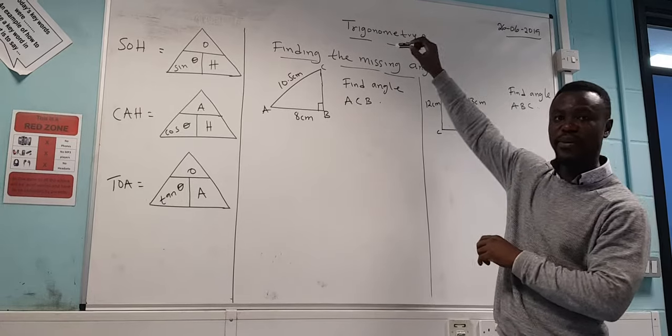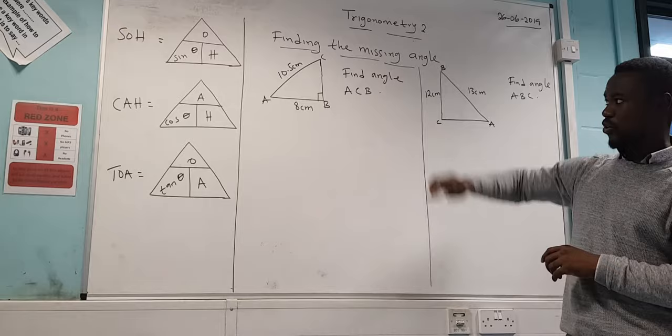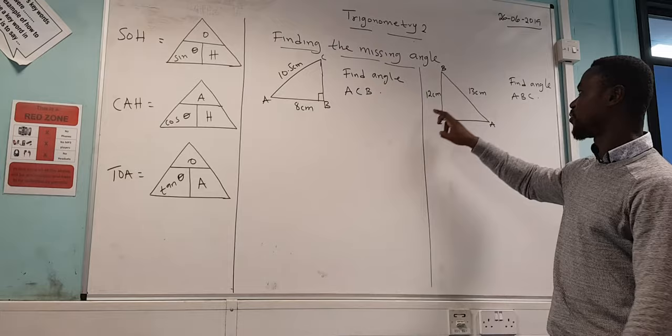So we carry on from the trigonometry where we looked at finding the missing sides. This time we are looking at finding the missing angle. So what they usually do is they give you two of the sides and they ask you to find the angle.